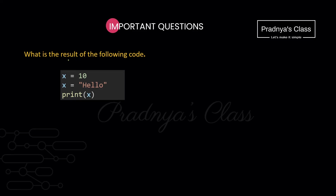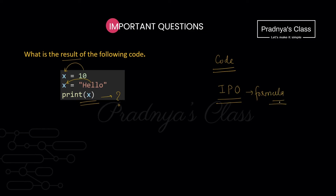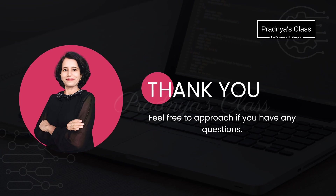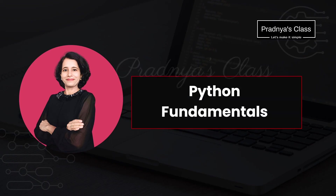There is one more question where you need to find the result of the following code. 10 is initialized to x, then the string 'hello' is initialized to x. When we print x, what will we get? This is an assignment to you — let me know the answer in the comments below. Based on this chapter you will also get questions where you need to write simple programs based on input, process, and output — generally based on certain formulas, which we will cover in the next video. That's the wrap for today. In case of any doubt, let me know in the comments. Until next time, stay curious, stay healthy. I will see you in the next video.